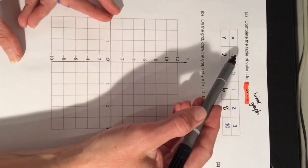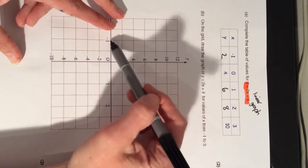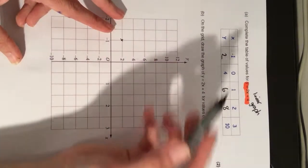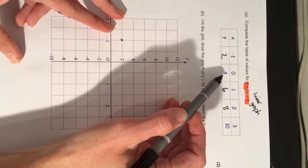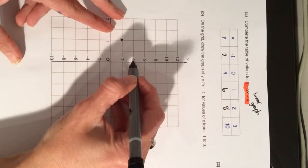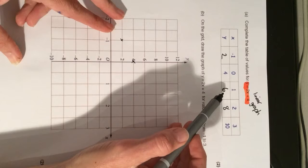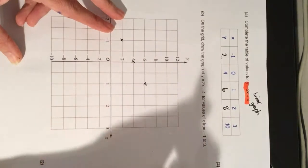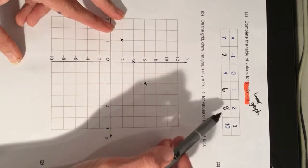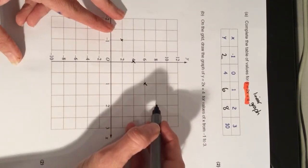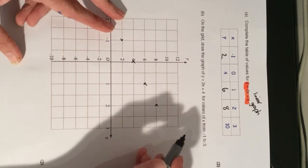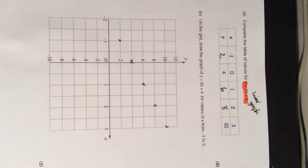When my x value is minus 1, so when x is minus 1, y is 2. And then when x is 0, y is 4. And when x is 1, y is 6. And then when x is 2, y is 8. And then the last one, when x is 3, y is 2. So, I have plotted my values.